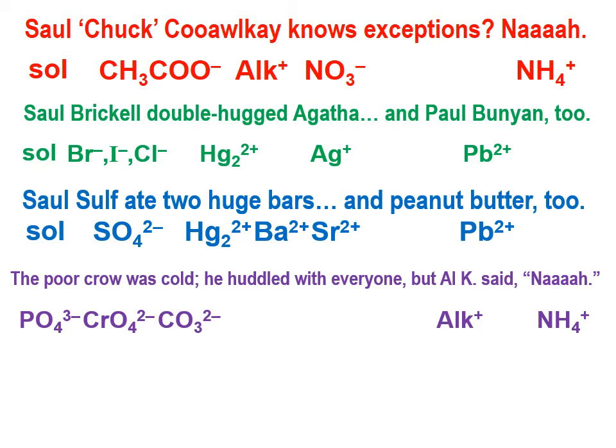The fourth mnemonic is: 'The poor crow was cold. He huddled with everyone, but Al K said, nah.' When you huddle with someone, you join with it — when ions join and are clumped, they are insoluble. But Al K, that is the alkali metal ions and the ammonium ion, don't form insoluble compounds.